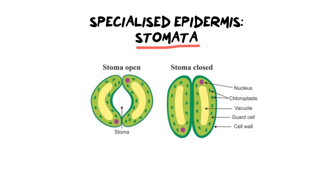The stomata are the little openings on the underside of the leaf. What you can see here is what we call a guard cell — there are two of them, and they literally guard the openings of your plant. They make sure that certain substances can come in and certain substances can come out. They do that by using their vacuole, which fills with water or cell sap or empties, and that's what opens and closes the stoma. Here is the stoma open and here is the stoma closed.